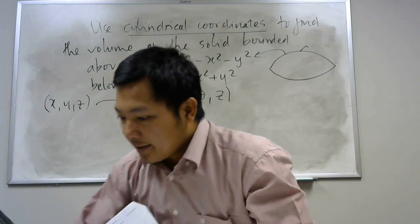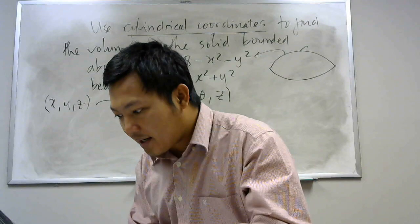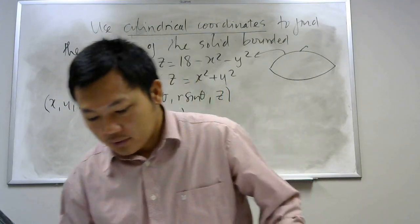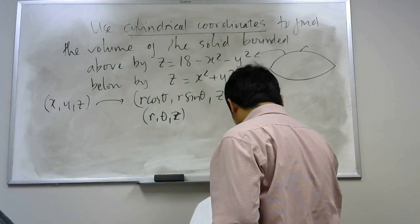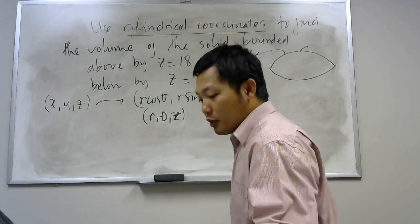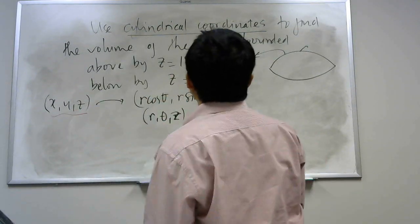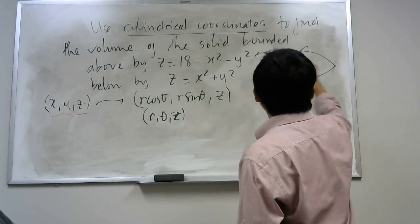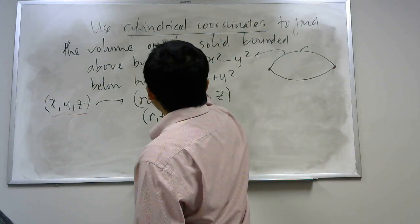All right, so how to solve this problem? I will move to, where is the marker? I will move to cylindrical coordinates. I don't use x, y, and z, I will use r, theta, and z. So I have to see what happens. First, I need to find the intersection between two surfaces. So I put z equal to z.